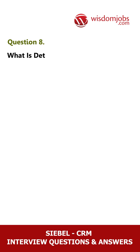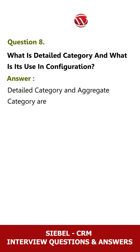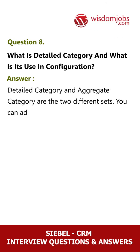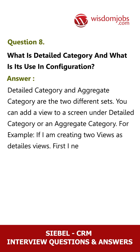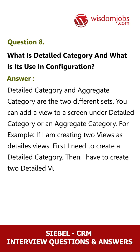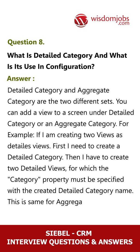Question 8: What is detailed category and what is its use in configuration? Answer: Detailed category and aggregate category are two different sets. You can add a view to a screen under a detailed category or an aggregate category. For example, if creating two views as detailed views, first create a detailed category, then create two detailed views for which the category property must be specified with the created detailed category name. This is the same for aggregate views also.